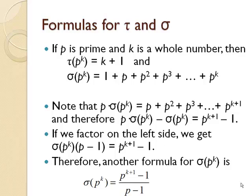If we want a formula for sigma of P to the K, we can notice that if we multiply the left and the right hand side by P we get P times sigma of P to the K is P plus P squared plus P cubed all the way up to P to the K plus 1 power. And now if we take this second statement and subtract the first statement we get P times sigma of P to the K minus sigma of P to the K is P to the K plus 1 minus 1.